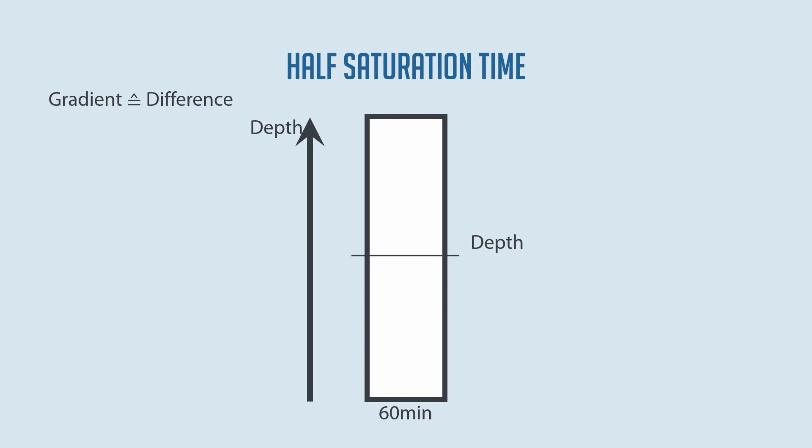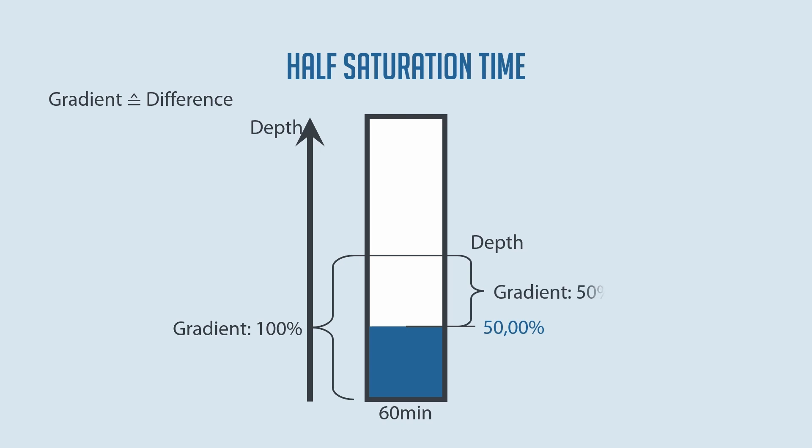Let's take a quick look at where this irregular saturation behavior comes from. The term 'gradient' is often used for this, and it can be described as the pressure difference. At the beginning, a tissue is not yet saturated and therefore has a difference of 100% to the desired pressure at any given depth. Over time this difference — the gradient — decreases. After the first half-saturation time the gradient is only 50%, which means that as the gradient decreases, the speed at which the pressure is equalized also decreases.